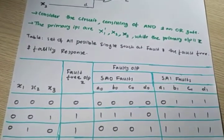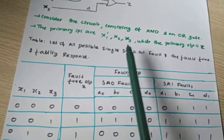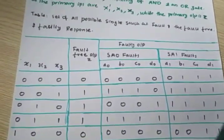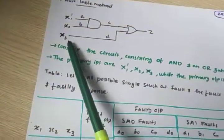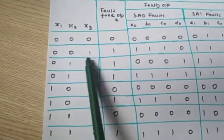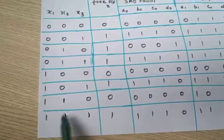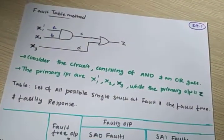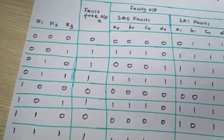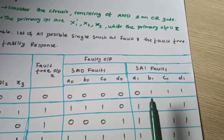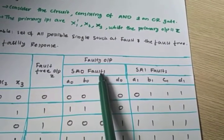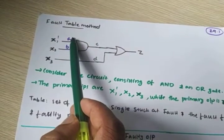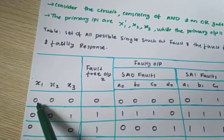The primary output is z. First we need to find out the fault table. The fault table is the set of all possible single stuck faults — both fault-free and faulty responses. The inputs x1, x2, x3 are listed: 0 0 0, 0 0 1, 0 1 0, 0 1 1, 1 0 0, 1 0 1, 1 1 0, 1 1 1. Next is the fault-free output, and then the faulty output — first stuck-at-zero fault, then stuck-at-one fault.